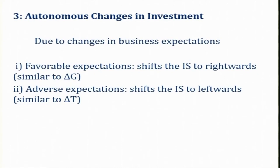Another factor that affects the IS schedule is autonomous changes in investment — for example, due to changes in business expectations. If there is a favourable expectation, then at the given rate of interest there will be an increase in the autonomous component of investment. As a result, the IS curve will be shifting rightwards.